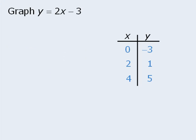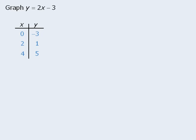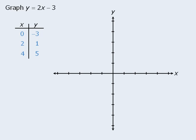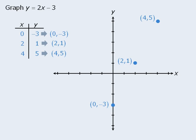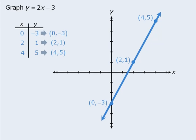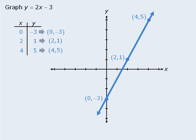Now that we have three solutions to the equation, we are ready to graph our line on the xy coordinate plane. The first solution can be written as the point (0, negative 3), and this point is right here. The next solution can be placed here, and the last solution can be placed here. When we connect these points, we get a line, and this line represents all of the solutions to the equation y equals 2x minus 3.